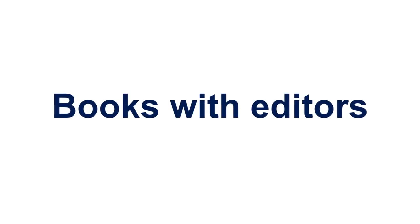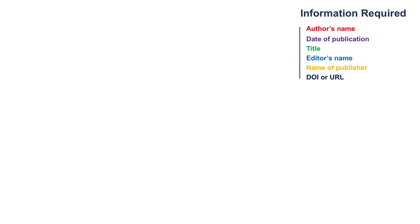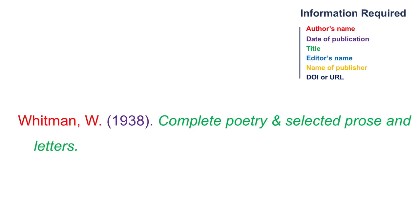The book might also have editors, who must also be included in your citation. If the book includes both a primary author and an editor, include the editor's name after the book title: first initial, period, the last name, comma, add Ed with a capital E and a period. Include in parentheses and follow with a period. Then complete as normal.